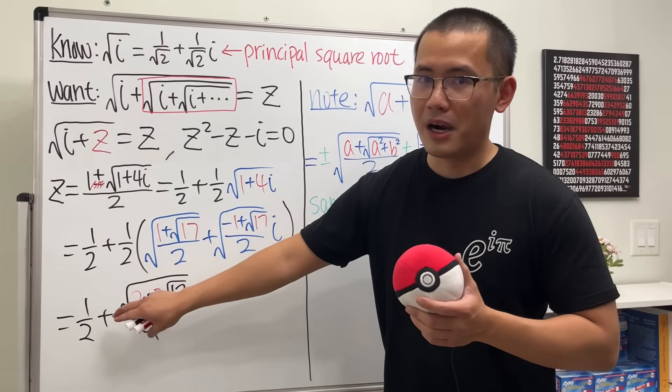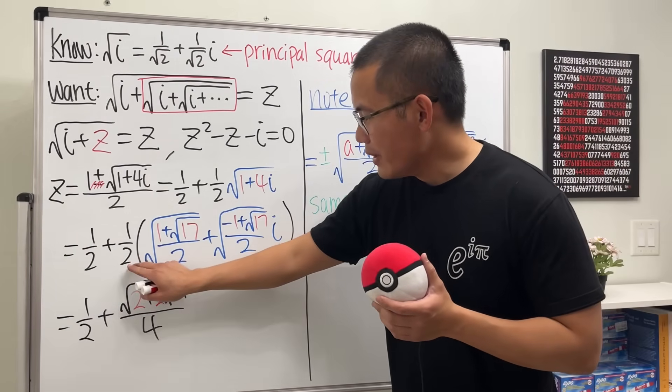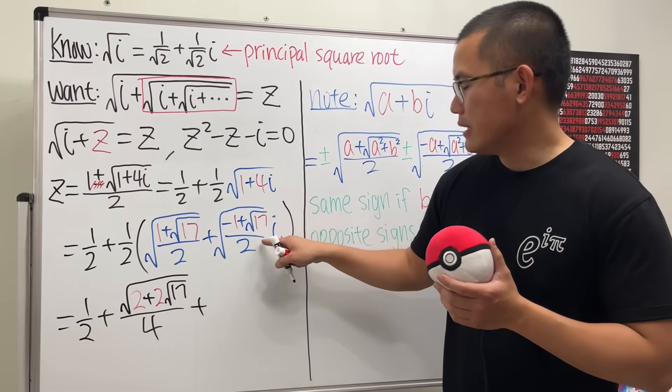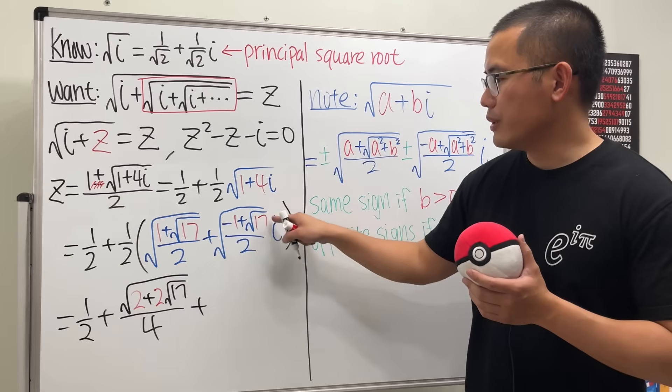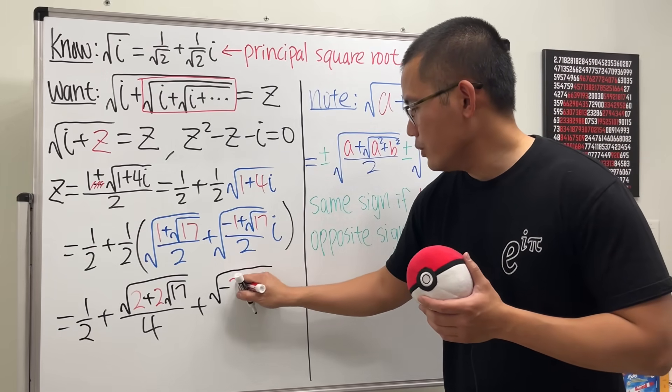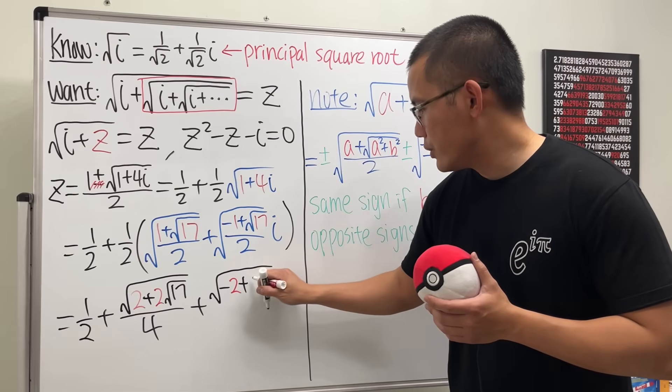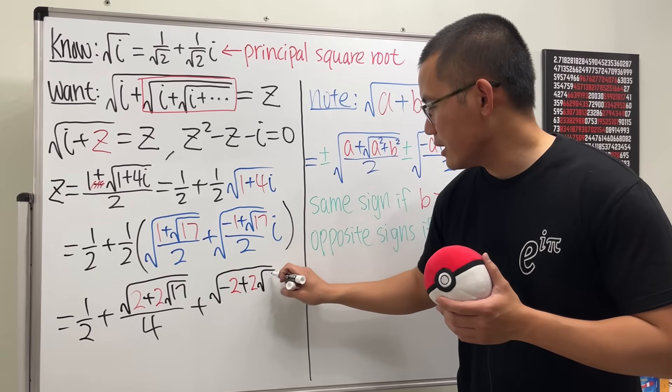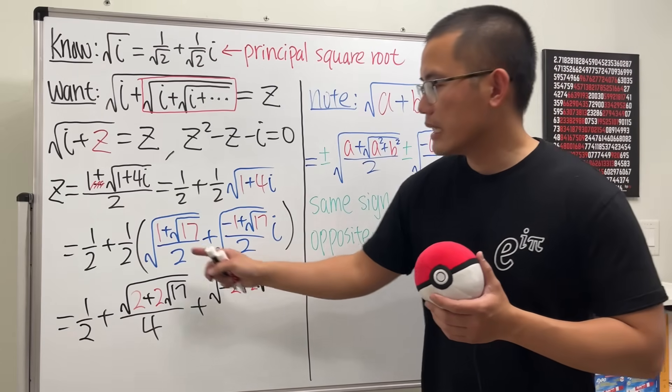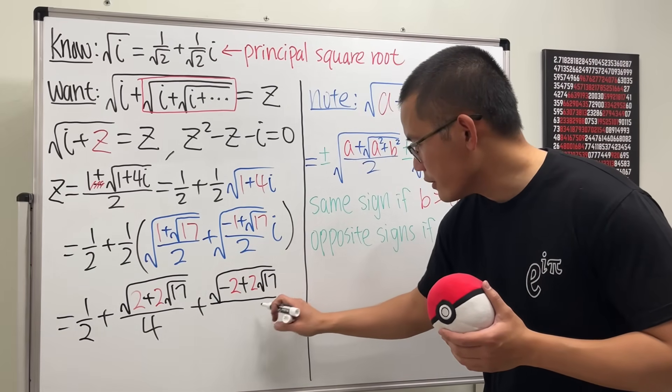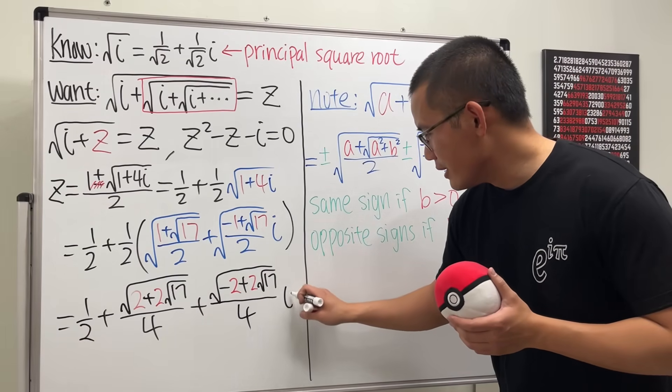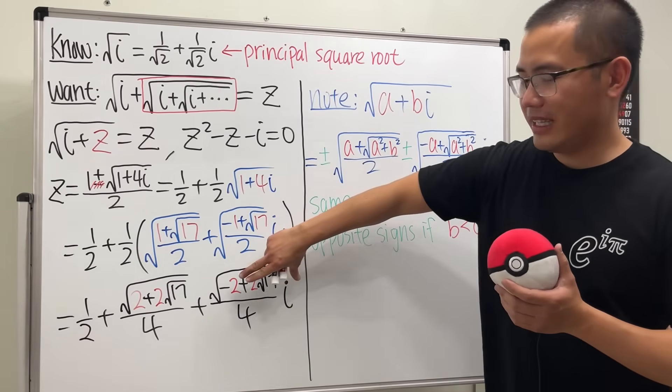And in fact, this is the real part. And then I will take the 1 half, multiply with this. So again, same thing. Multiply this and that by 2 inside. So we will have the square root. And we will have negative 2 and then plus 2 square root of 17. And then again, the bottom will be a regular 2. Times that regular 2, we will have that regular 4. And finally, ladies and gentlemen, I'm just going to put an i right here. So that's the imaginary part.